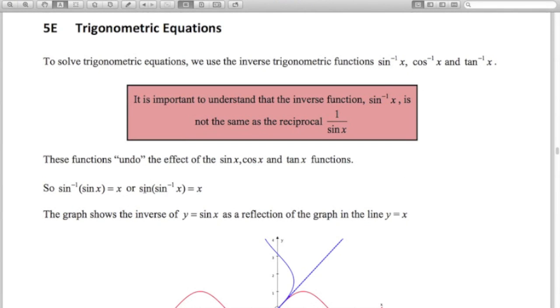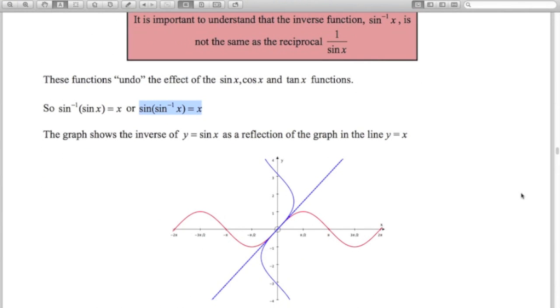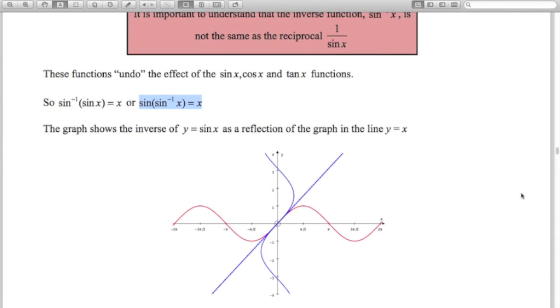This shows that these are inverse functions. Sine of sine to the minus 1 x is x. Got the graph here. Remember that a function and its inverse are related in that the inverse is a reflection in the line y equals x. See that blue line there, that's the inverse sine function. You can see I shouldn't even be calling it a function at all because it is not a function. That's the inverse sine relation.